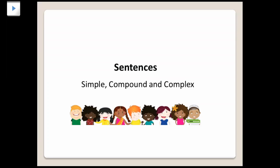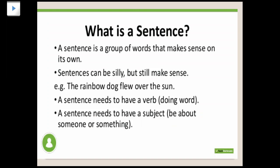Today I'm going to take a grammar topic from your English practice book. The topic is simple, compound, and complex sentences. What is a sentence? A sentence is a group of words that makes a complete sense on its own. A sentence needs to have a verb and a subject, or we can divide a sentence into two parts: a subject and a predicate. The subject is the doer of the action, and the predicate contains the action and other parts.